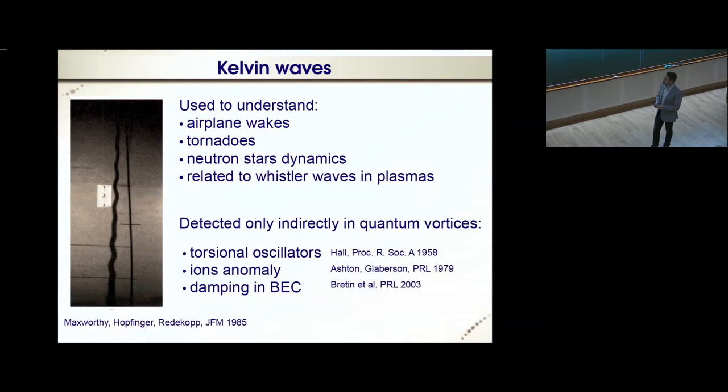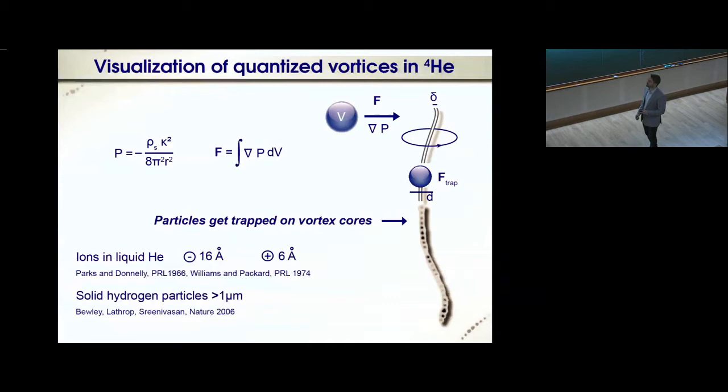The visualization technique that led to the direct visualization of Kelvin waves is based on the trapping of particles into the vortex core due to a Bernoulli pressure gradient that sucks the particles in the vortex core. This theory was developed in the 60s and 70s by Parks and Donnelly to explain why bubbles created by injecting ions into the superfluid were trapped onto the vortex core. Recently, the work at Maryland by Greg Bewley, then later Paoletti, used solid hydrogen particles to visualize the quantized vortices on the order of a few microns in size.